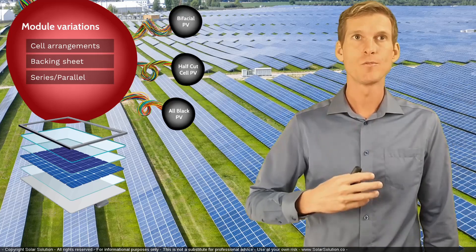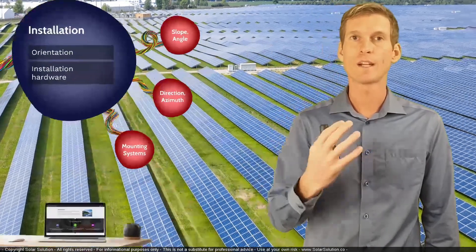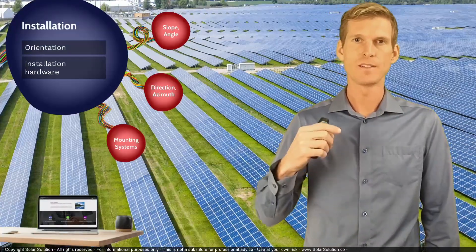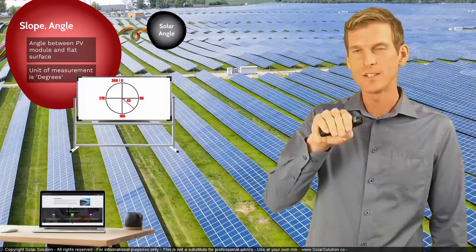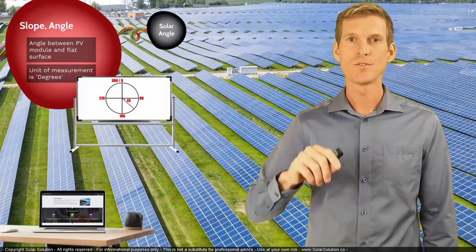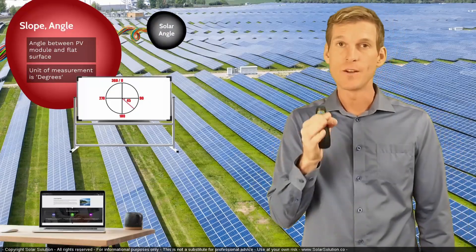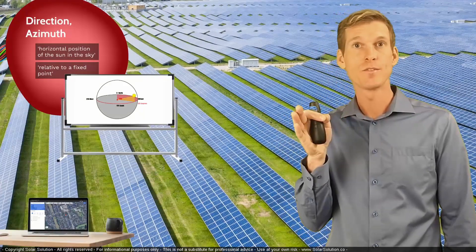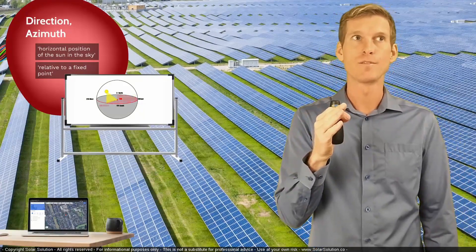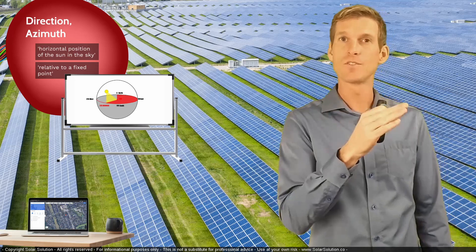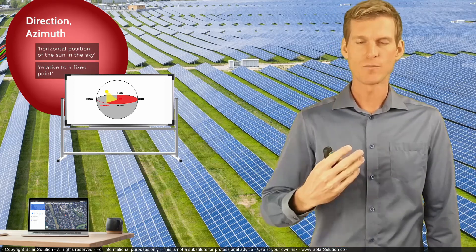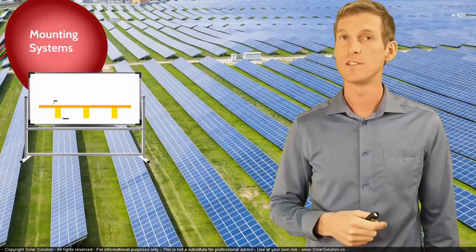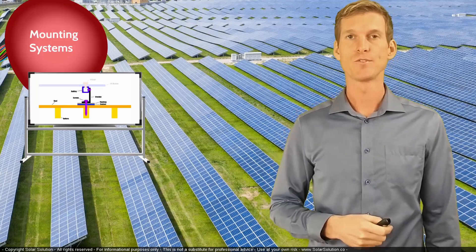Within the topic on installation, we'll look at the more practical sides of solar panel installation. We'll look at the slope, the angle, or the tilt of your photovoltaic modules. We'll look at the direction — or the azimuth — of where you want to aim your panels, and what the impacts are of aiming them in a certain direction. And we'll look at the practical sides of the mounting systems and the options you have for photovoltaic modules.